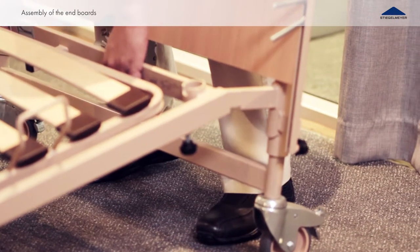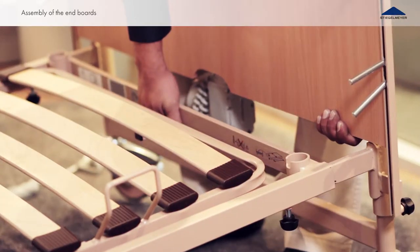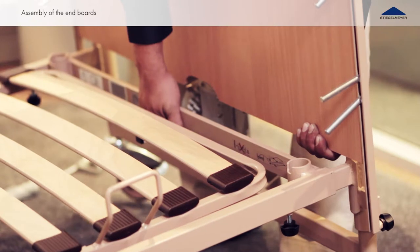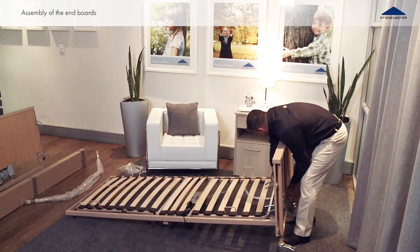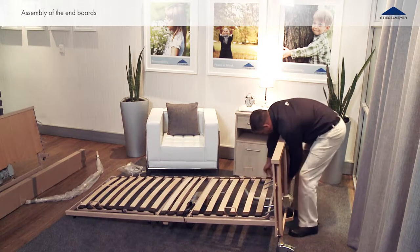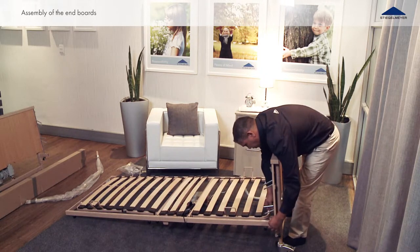Lift the reclining surface frame at the head side and push the two support brackets from the head section end board into the tubes of the reclining surface frame to the limit. There should only be a five millimeter gap between the reclining surface frame and the corner post.